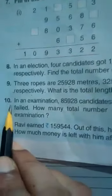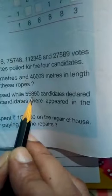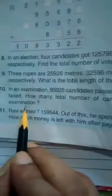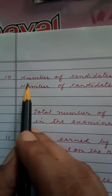Now see question number 10. In an examination 85,928 candidates passed while 55,890 candidates declared failed. How many total number of candidates were appeared in the examinations? Here also we will add.